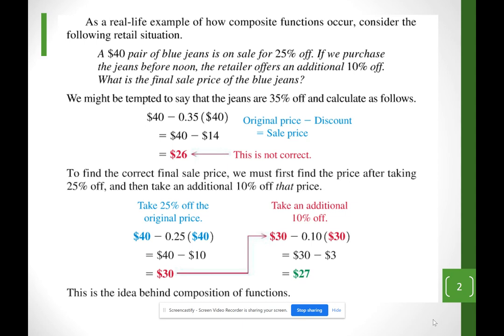...25% off. If we purchase the jeans before noon, the retailer offers an additional 10% off. What is the final sell price? Most people think '25% plus 10% equals 35% off' — 25% because they're on sale and 10% before noon — but that is not correct.